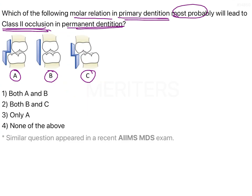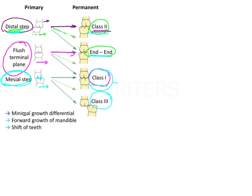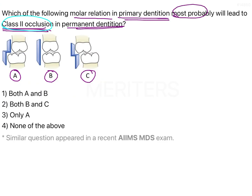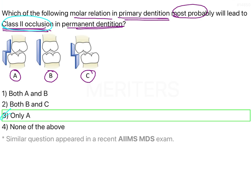In our question, we are asked which leads to Class 2 occlusion. Class 2 corresponds to the distal step, where the mandibular molar is more distally placed compared to the maxillary molar. This is seen only in image A — in A the mandibular molar is more distally placed, making it the distal step, which leads to Class 2 occlusion. Image B is the flush terminal plane (Class 1 or end-on) and image C is the mesial step (Class 1 or Class 3).